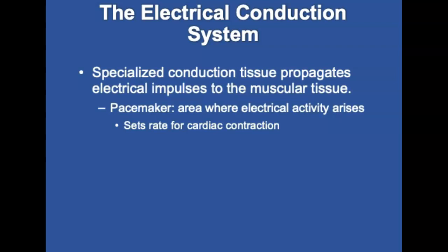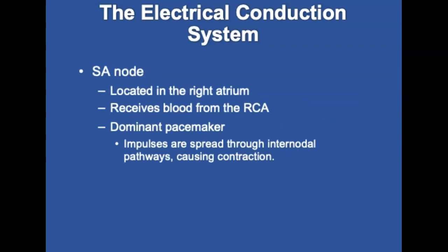Let's talk about the conduction system. It is specialized conduction tissue made up of specialized pacemaker cells that conduct electrical impulses to the muscular tissue in the heart. The pacemaker is the area of conduction tissue where electrical activity arises and sets the pace for contraction. The dominant pacemaker is the SA node, which lies at the junction of the superior vena cava and the right atrium. It receives blood from the RCA. In about 0.08 seconds, electrical impulses from the SA node spread across the atria through three intranodal pathways: the anterior intranodal pathway, the middle intranodal tract formed by the Wenckebach tract, and the posterior intranodal pathway.